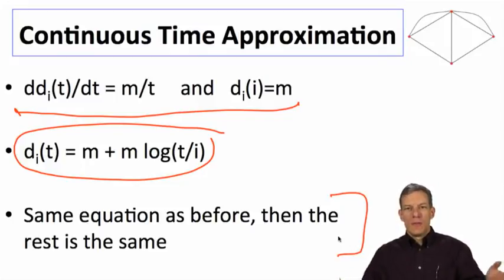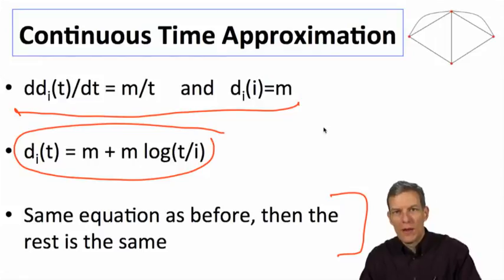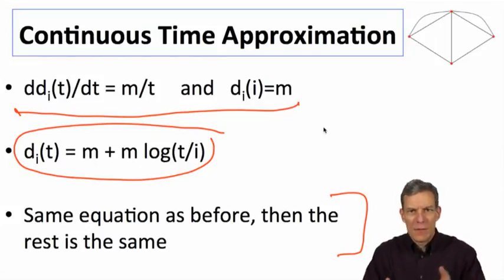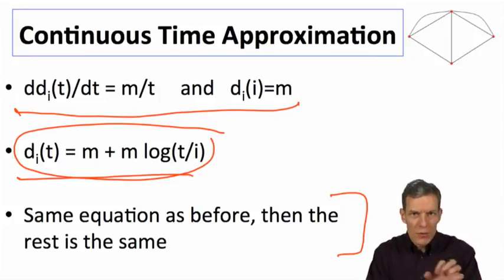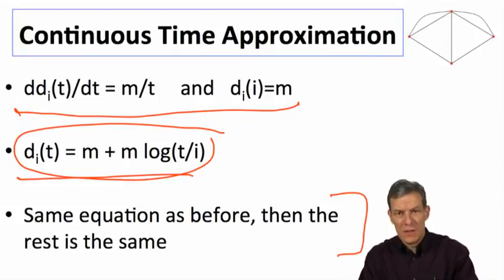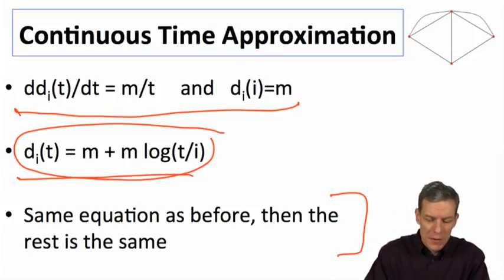You can just do the same calculation where we try and figure out how many nodes have degree less than 35 at some time t. That's going to be the ones for which this equation is less than 35. So figuring out the distribution function once we have this degree over time is quite simple. This is just saying that we could have done this with a differential equation. It can be quite a bit easier.